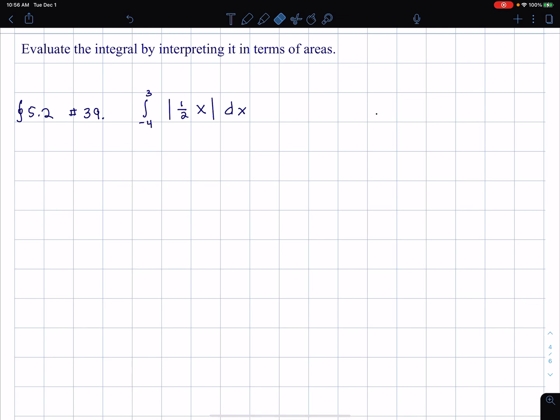I am going to use one of the properties of integration, which says I can take a constant out of the integral. Absolute value of one-half x is the same thing as absolute value of one-half times absolute value of x. And of course, absolute value of one-half is just one-half, and I can also bring that constant out.